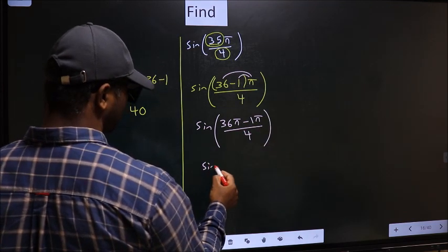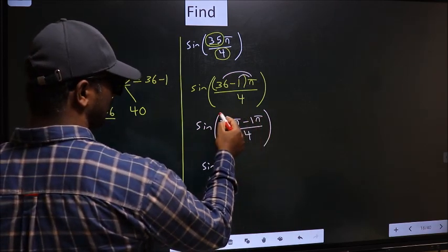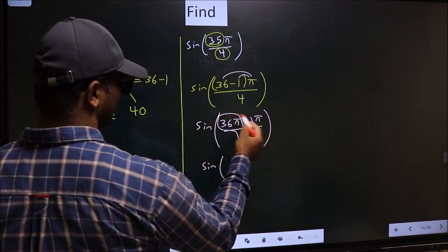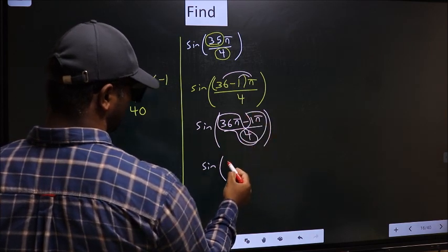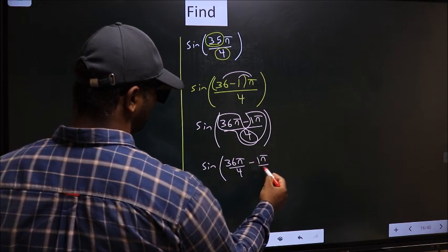Now sin. You should split the denominator here in this way. That is 36π by 4 minus 1π by 4.